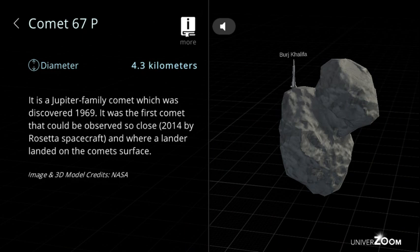Comet 67P, diameter: 4.3 kilometers. It is a Jupiter family comet which was discovered 1969. It was the first comet that could be observed so close in 2014 by Rosetta spacecraft and where a lander landed on the comet's surface.